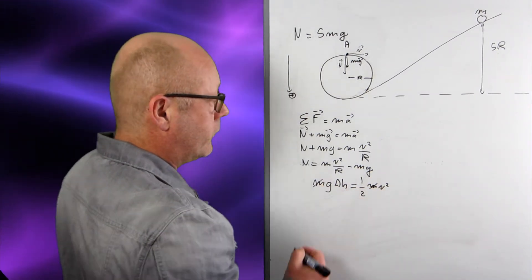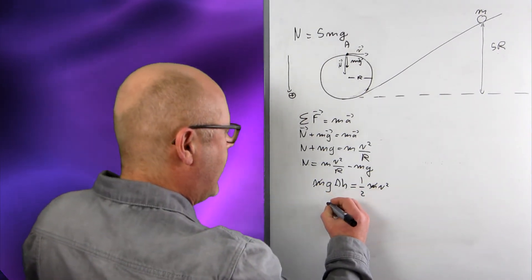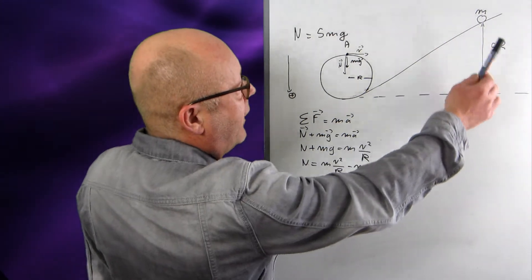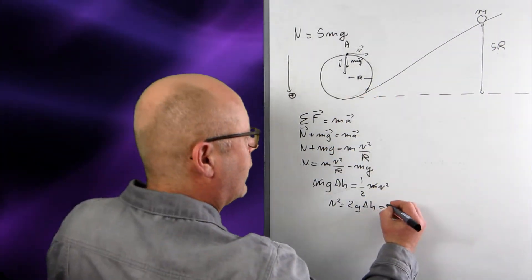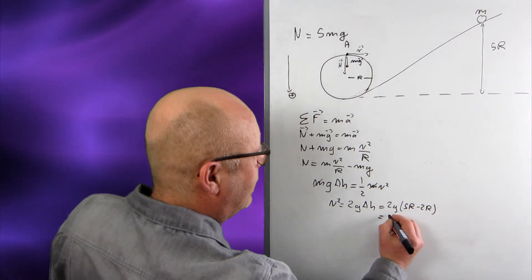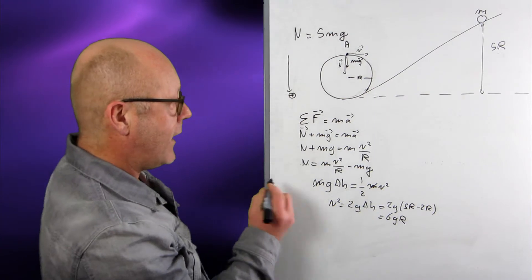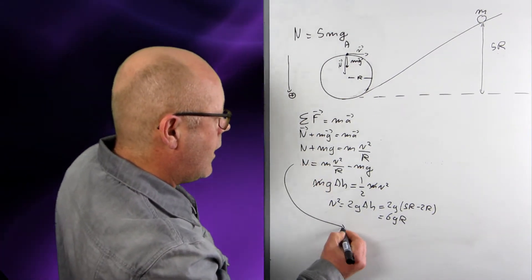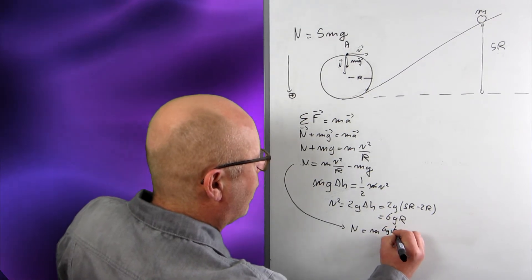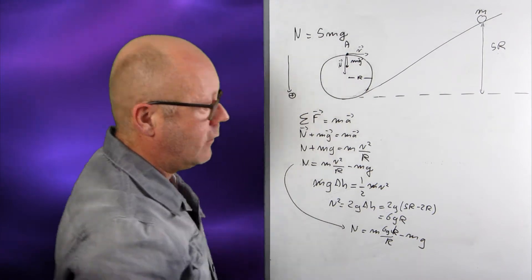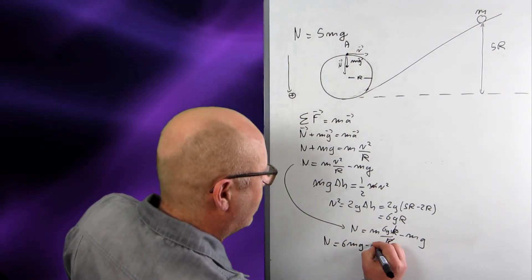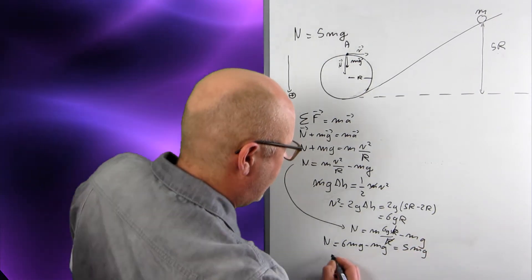I can cancel the m's and get an expression for v². So v² = 2g·Δh. The change in height Δh is 5r minus 2r, giving v² = 2g·(5r − 2r) = 2g·3r = 6gr. Now if I inject 6gr for v² into the earlier equation, I find N = m·6gr/r − mg.